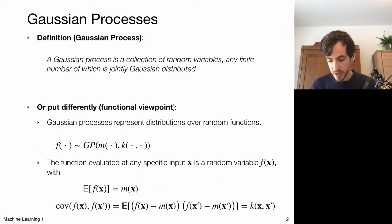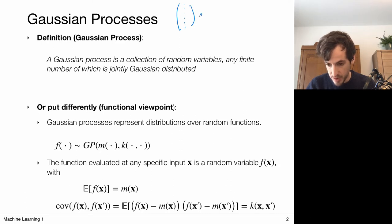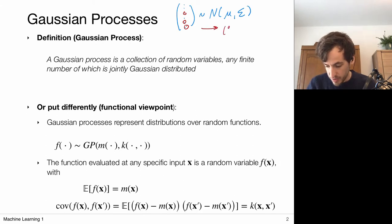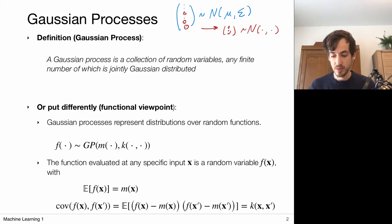Let's think about what this means. Suppose we have a finite collection of random variables drawn from a Gaussian with a particular mean and covariance matrix. If we take a sub-selection of these random variables, that vector is again normally distributed with some mean and covariance matrix. This property is directly given by the marginalization property of the Gaussian distribution.